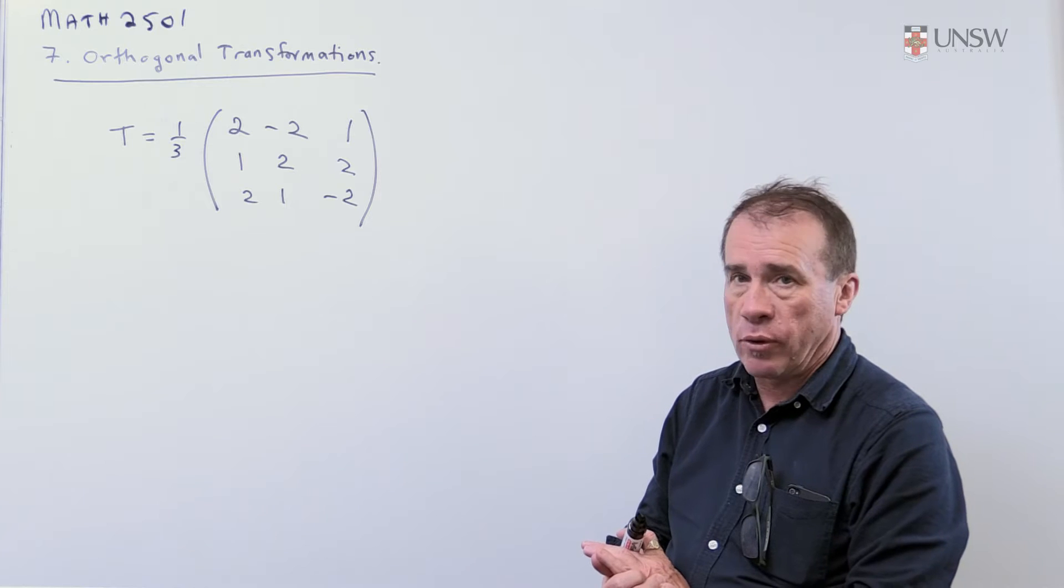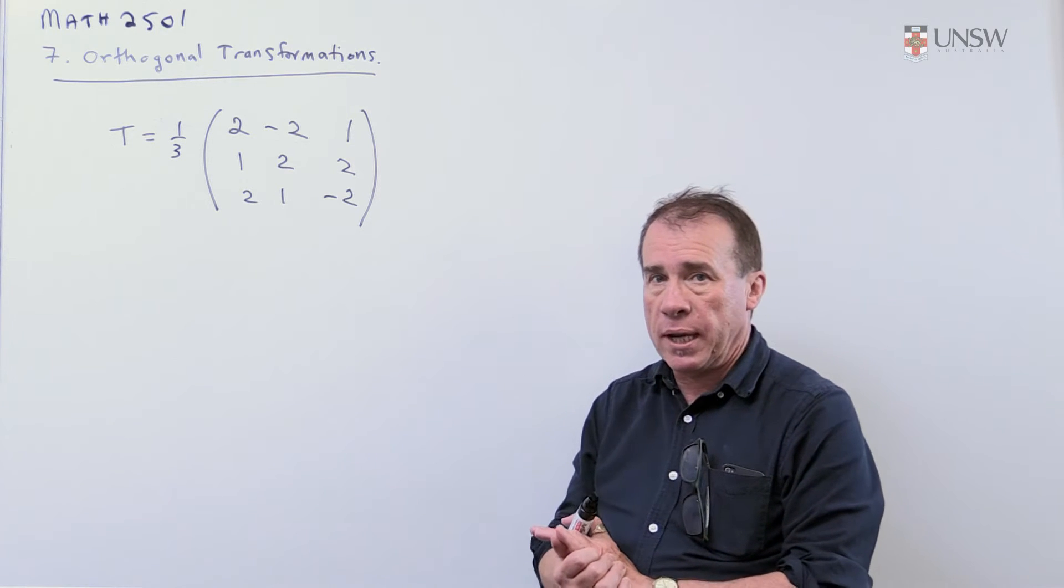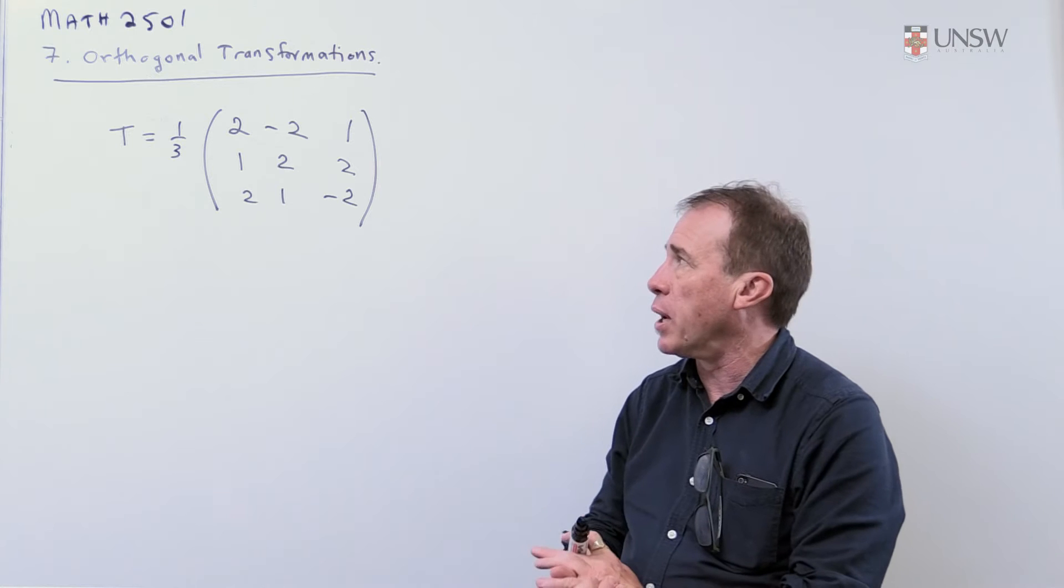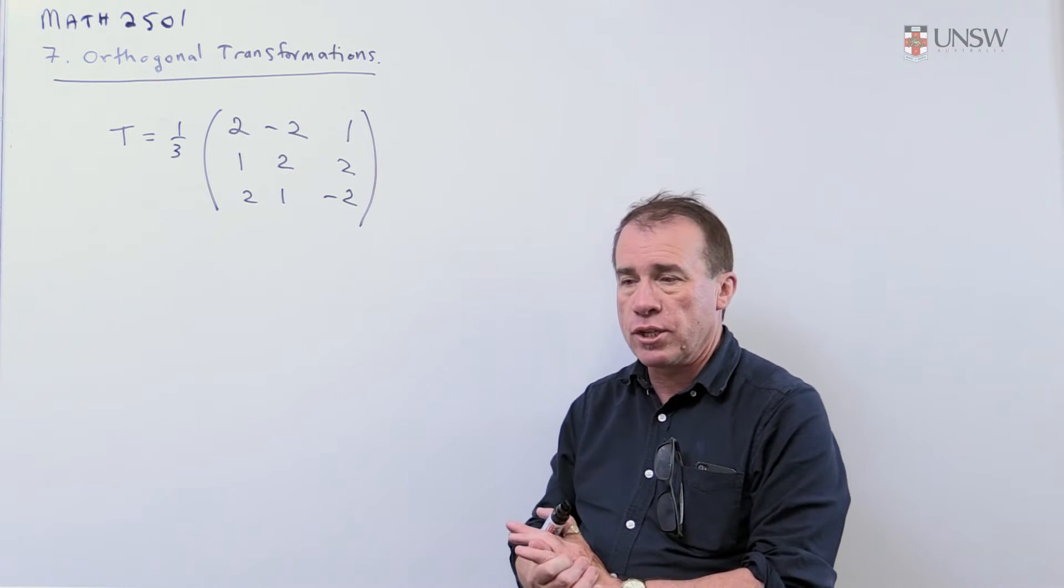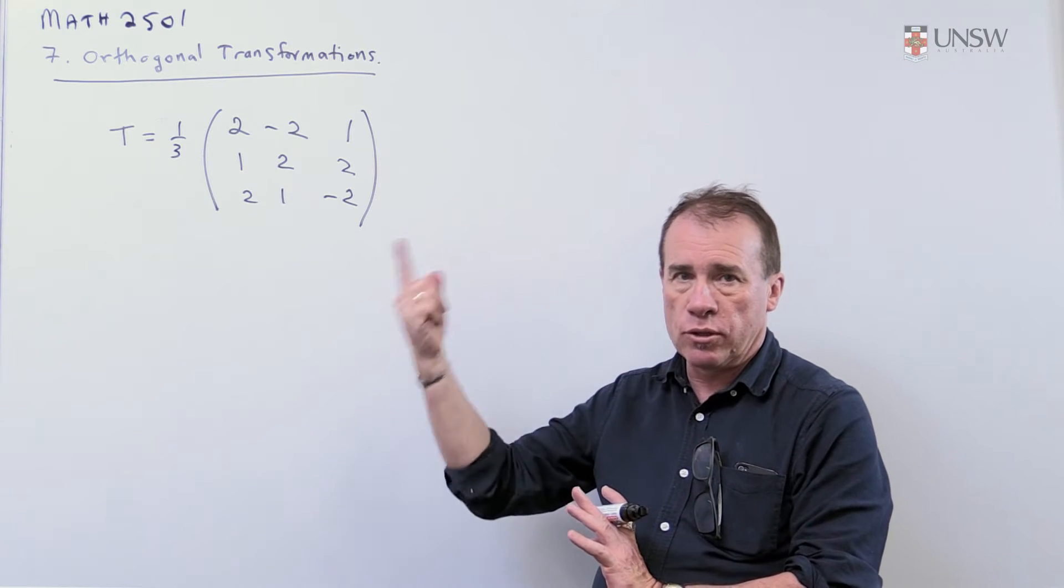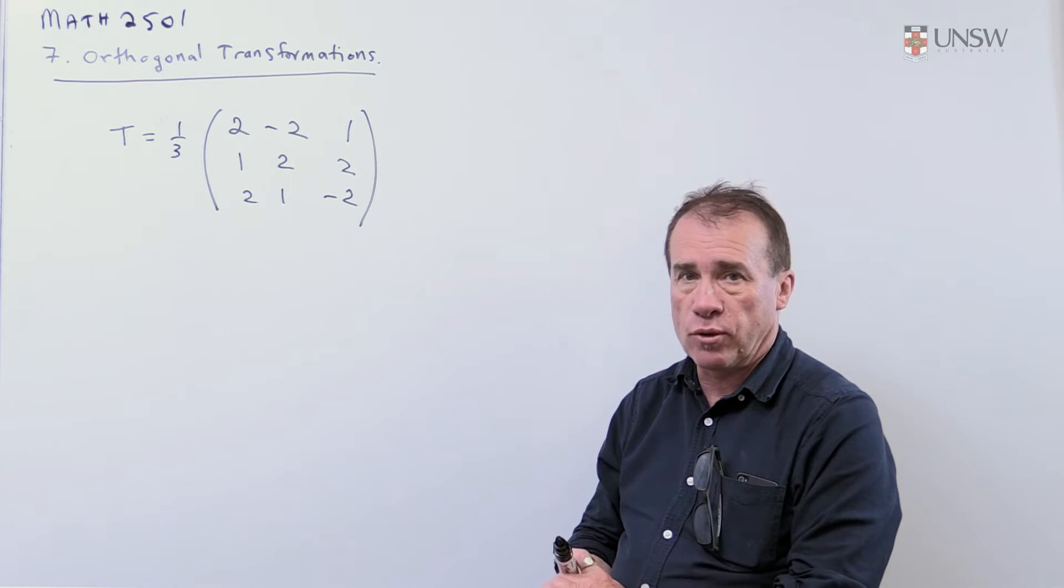We want to show that this is a reflection about some plane and we're going to find the equation of the plane followed by a rotation about the normal to that plane, about the axis which is normal to the plane.